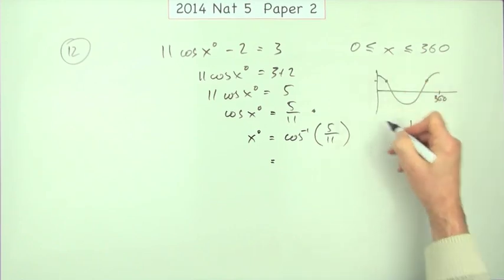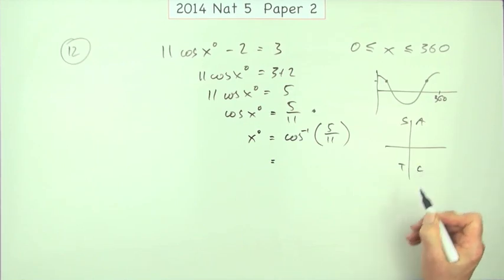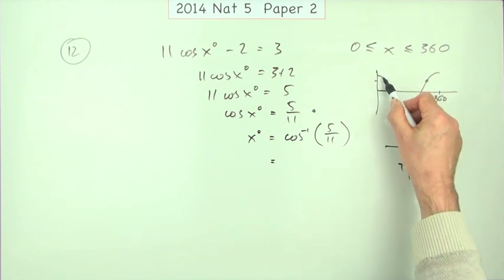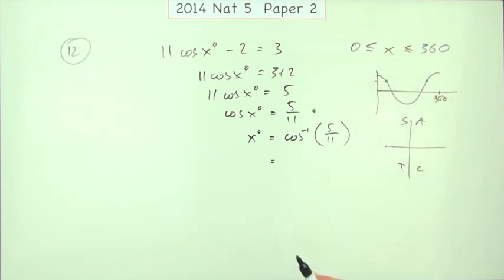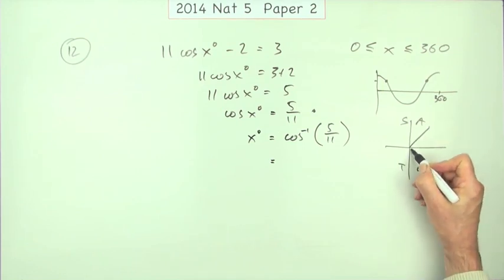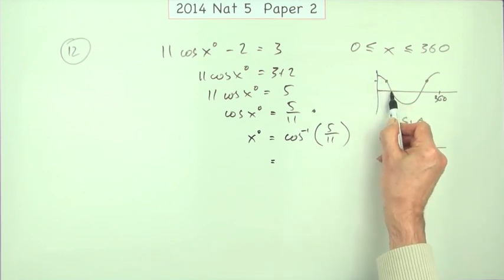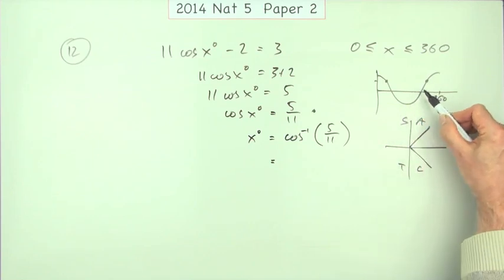Or you might use the analogue of the graphs, the all sine tan cos, the CAST diagram which simply again just tells you when it's above and when it's below. So in this one the cosine is positive which means it's either going to be in the first quadrant or it's going to be in the fourth quadrant. Just like the graph shows you here. It's positive in the first quarter, not the second, not the third but in the fourth one.